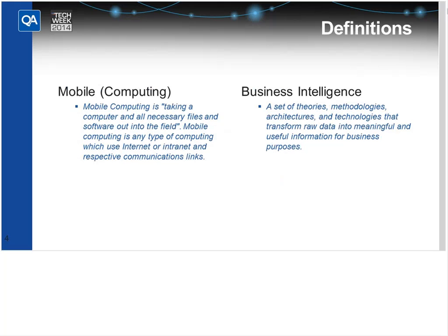Starting with definitions of mobile and business intelligence: with mobile computing, it's about taking the computer and all the necessary files and software out into the field. When you get the Microsoft Mobile BI, you're looking at both the data and the presentation model. You might have some processing as well to go between the two. It depends on what you want to do with the product and your users — how much you want to rely on the data going with them versus having it centralised on the server. It may be internet-connected and you may have to rely on the communications connection for some data items.